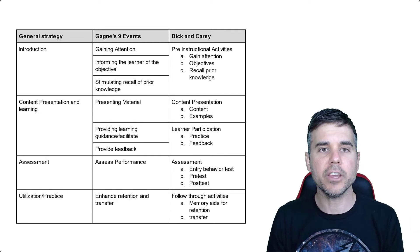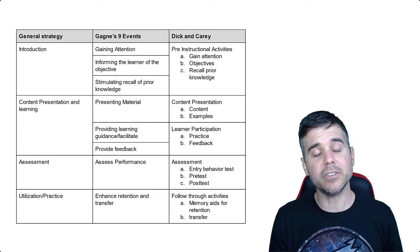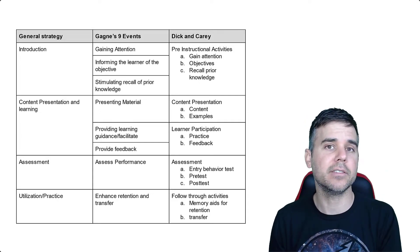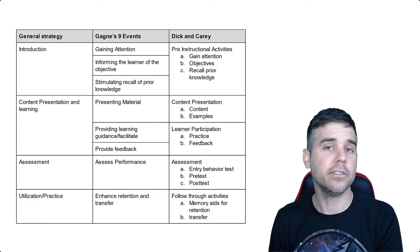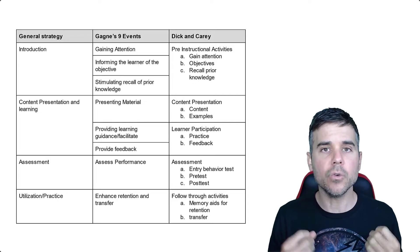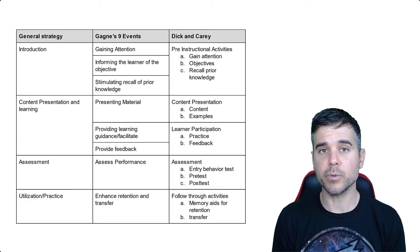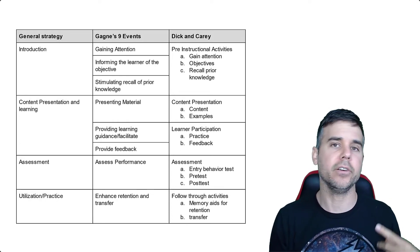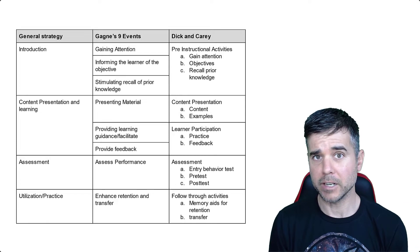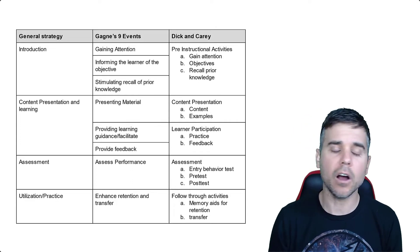So on the left-hand side you see my general strategy, and then on the right you see Gagné's nine events and Dick and Carey's model. Dick and Carey is another version of ADDIE — this is their organizational strategy. What I'm presenting here is called an organizational strategy — it's how you organize your course. We have organizational strategies, which are how we organize courses; delivery strategies, which are how we get people to learn, like game-based learning, problem-based learning; and then development strategies, which are like multimedia principles, HCI, Fitts' Law, interface stuff.